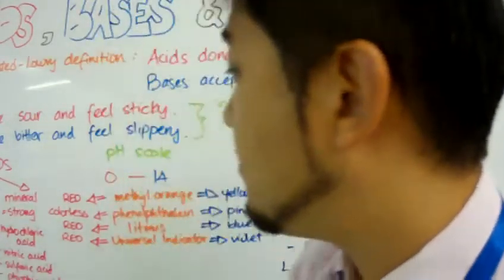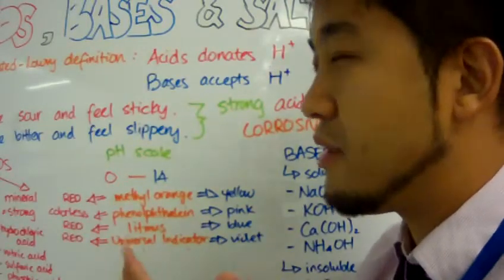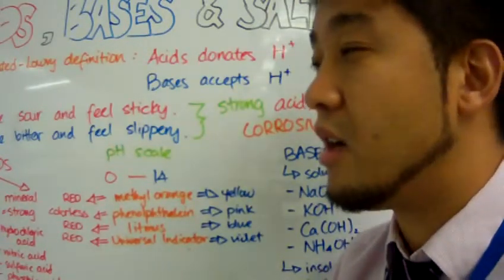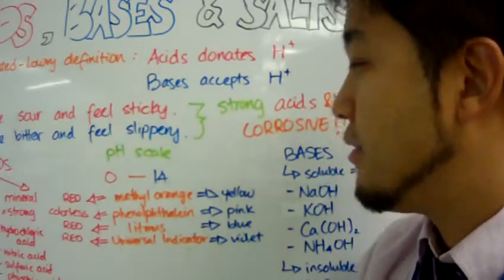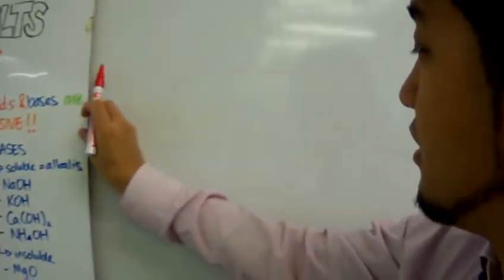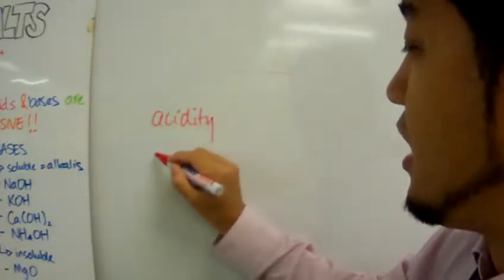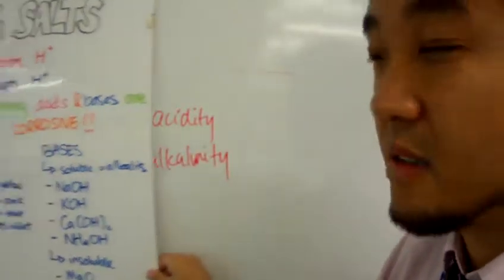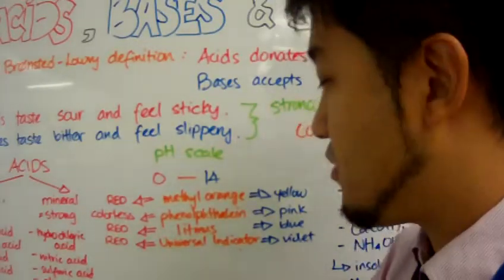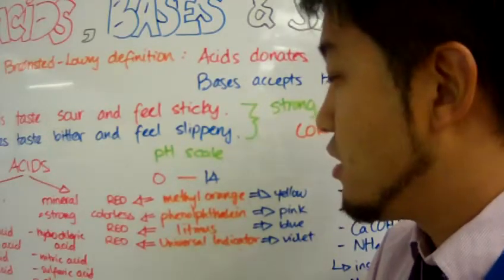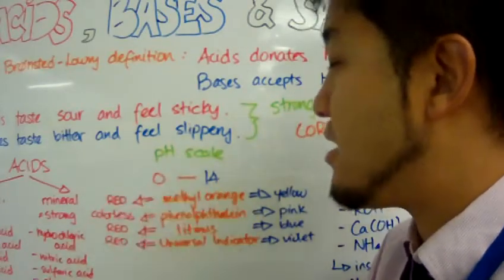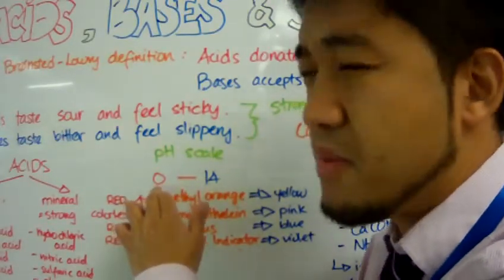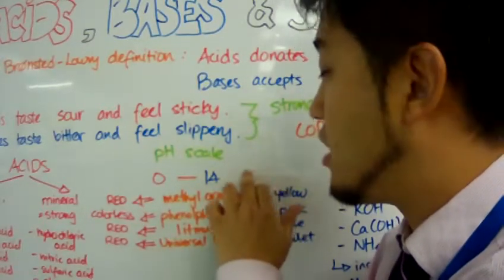How are acids and bases defined? Well, you can use a pH scale to quantify the relative strength, or the relative acidity or alkalinity of acids and bases. The scale, as you know, is from 0 to 14. So the lower the pH, the more acidic it is, and the higher the pH, the more basic it is.